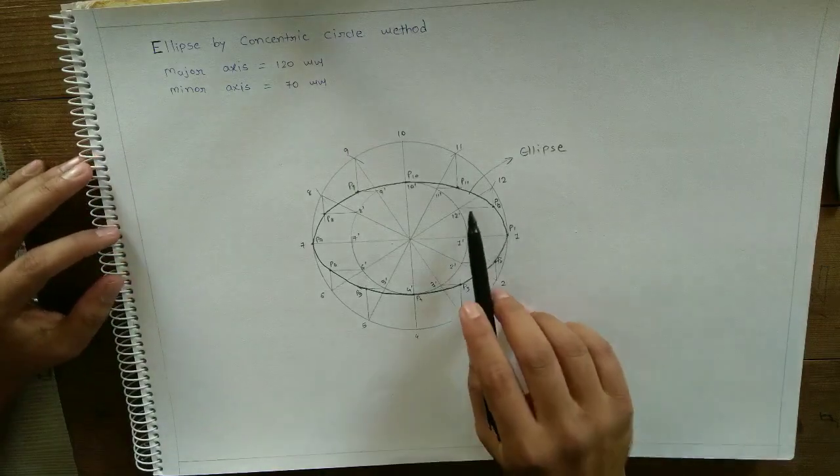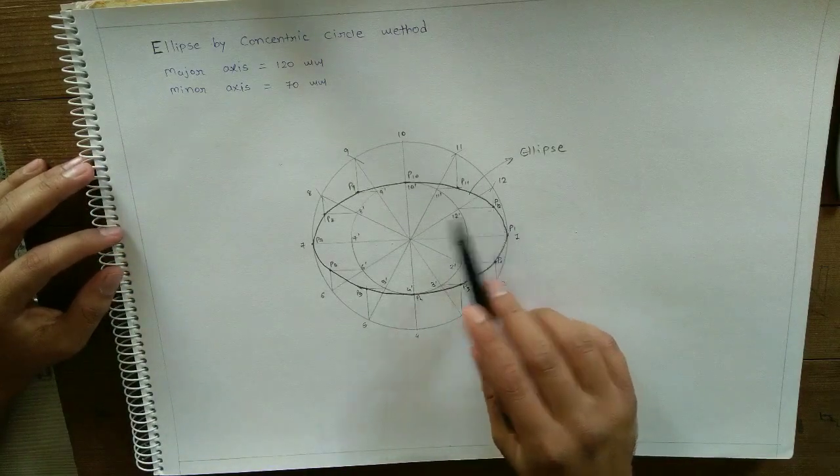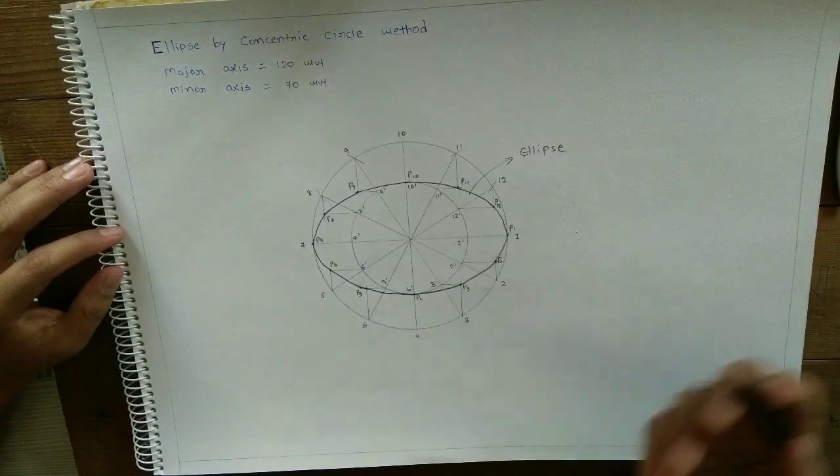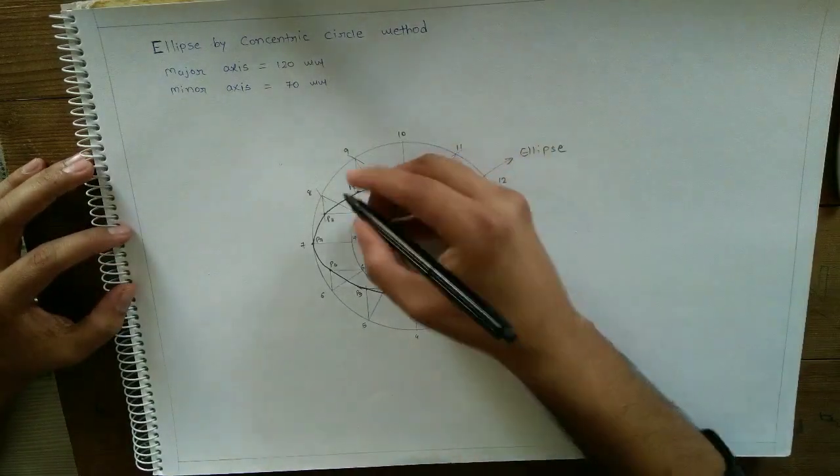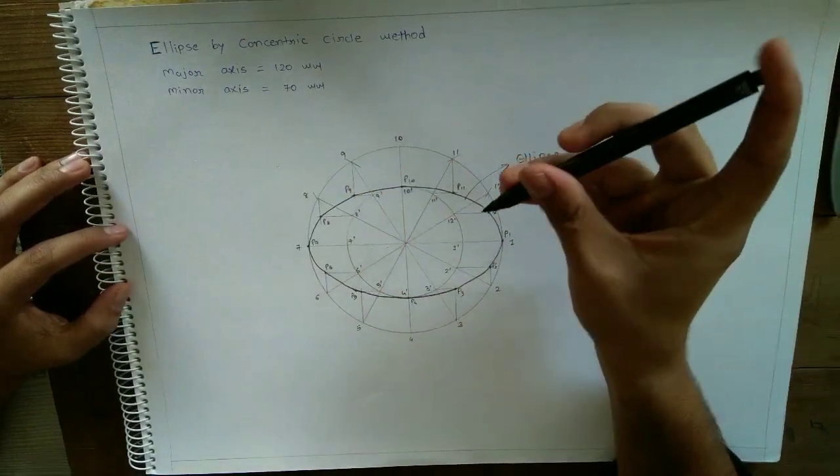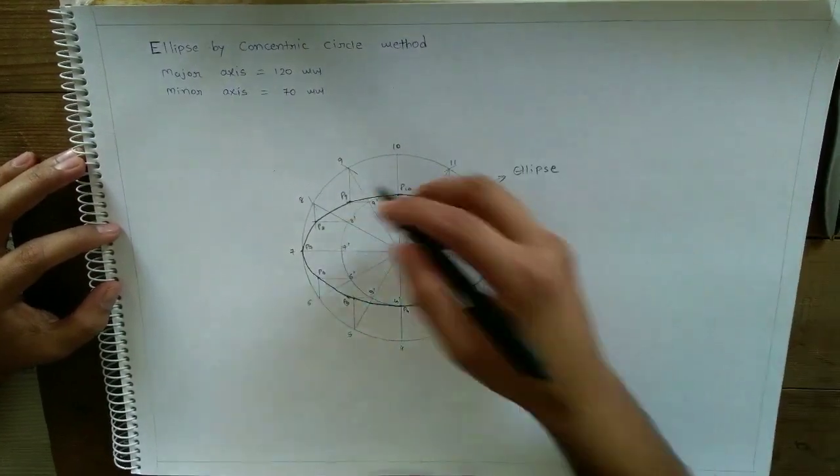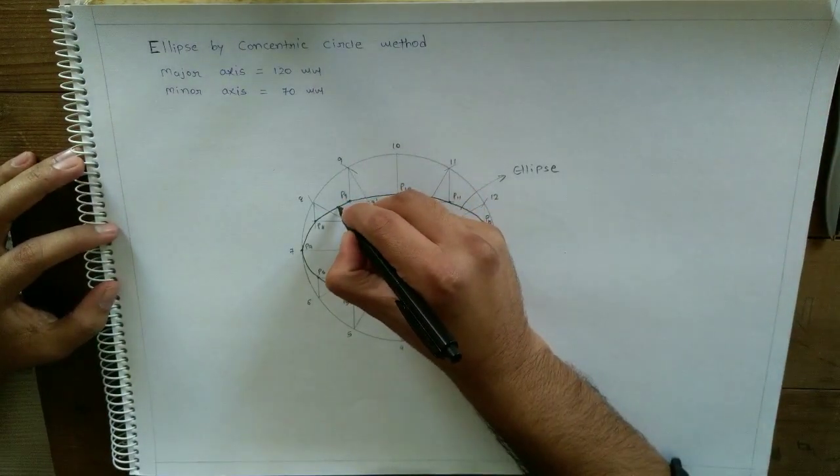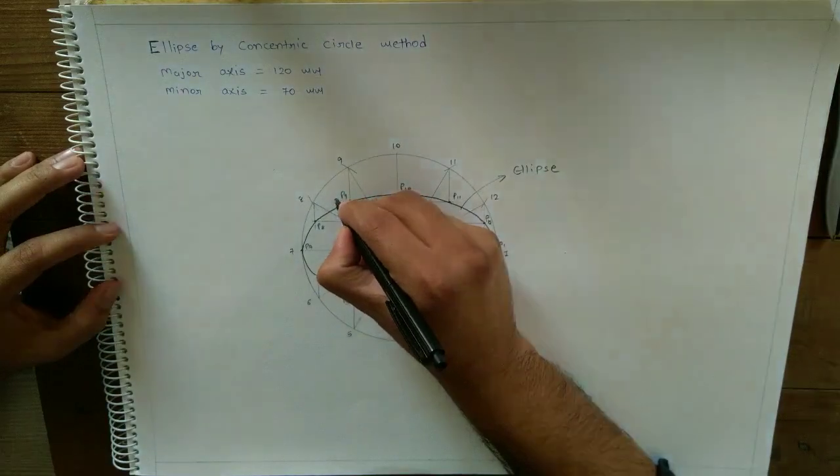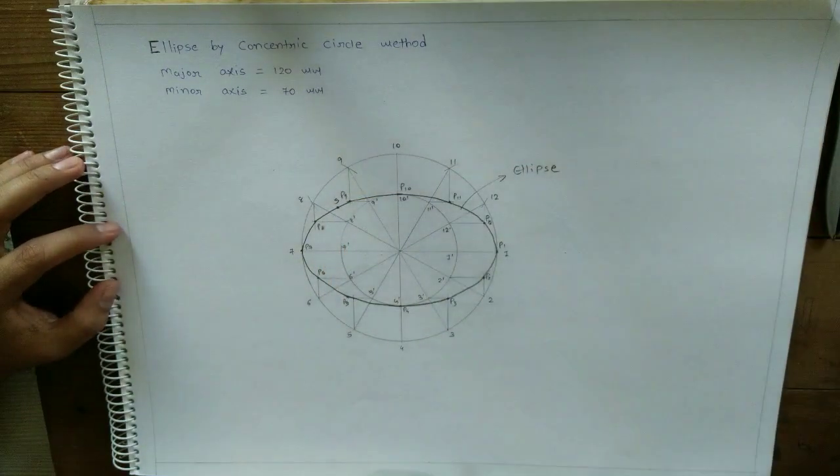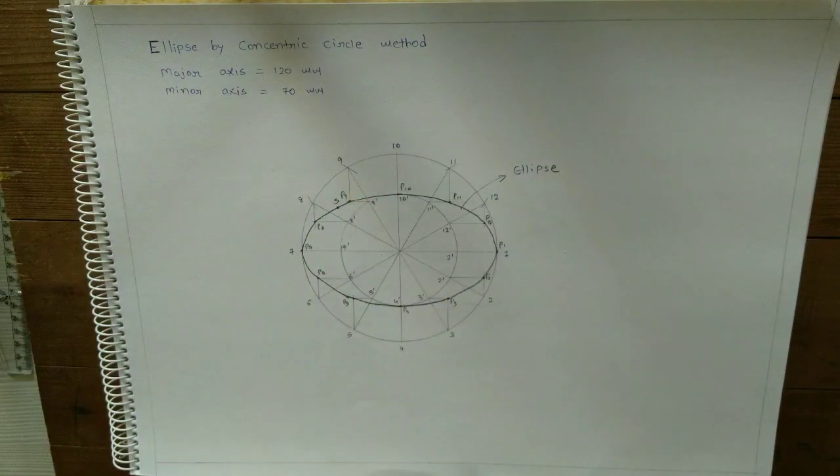Okay, so to draw tangent and normal at any point on an ellipse, we'll first start with marking a point anywhere on the curve. Let us say this is the point where we need to draw tangent and normal.